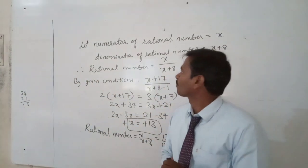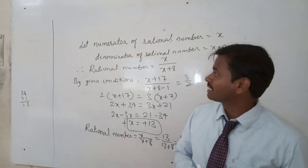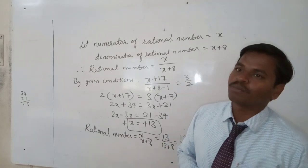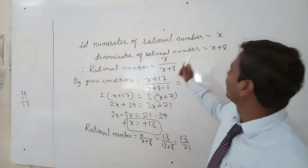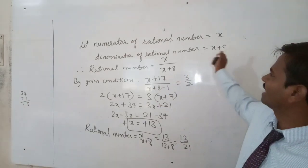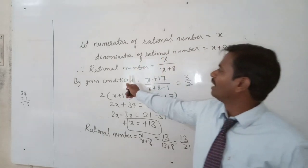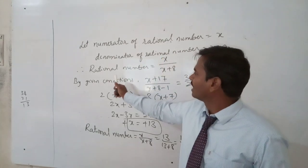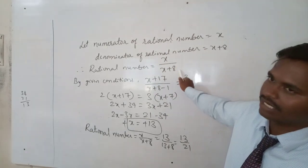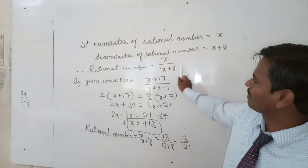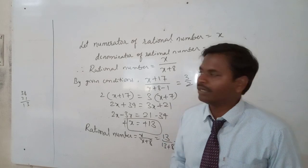To summarize: the rational number has its denominator 8 more than the numerator, so denominator becomes x plus 8 and numerator is x, giving the rational number as x by x plus 8. The second condition is that if numerator is increased by 17 and denominator decreased by 1, its value will become 3 by 2.